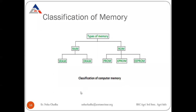Classification of memory: the types of memory include RAM and ROM. RAM is further divided into SRAM and DRAM. ROM is divided into PROM, EPROM, and EEPROM. All these types of memories will be covered in the next session.